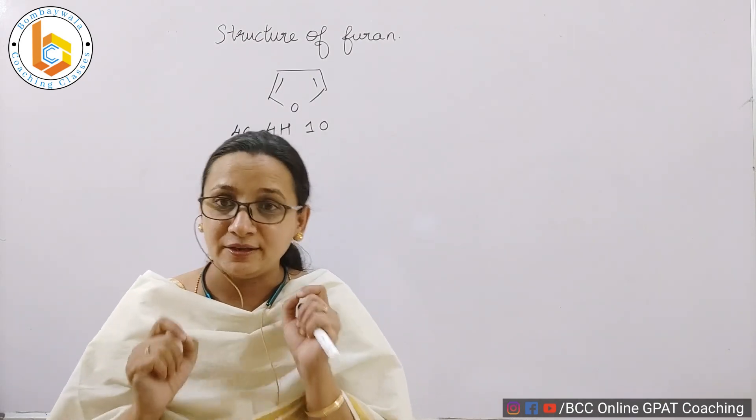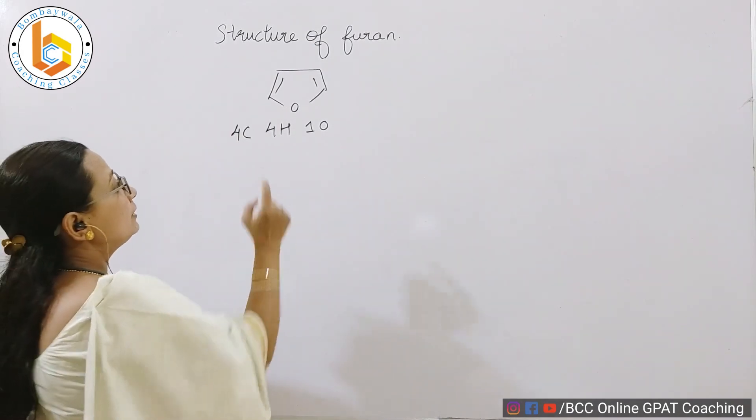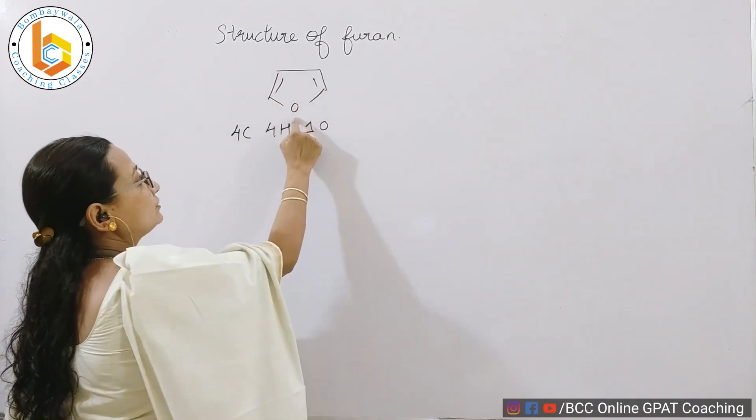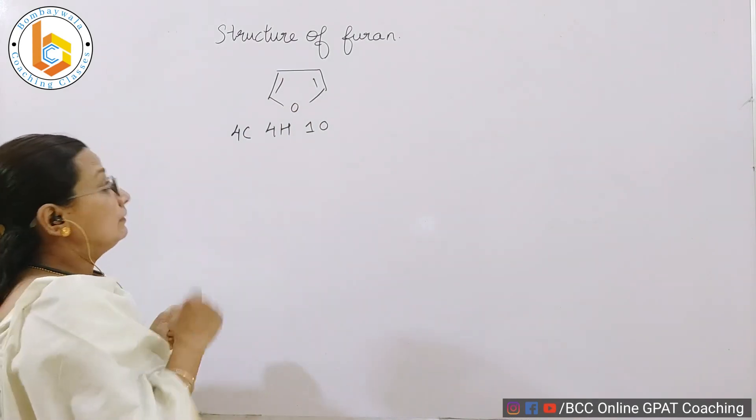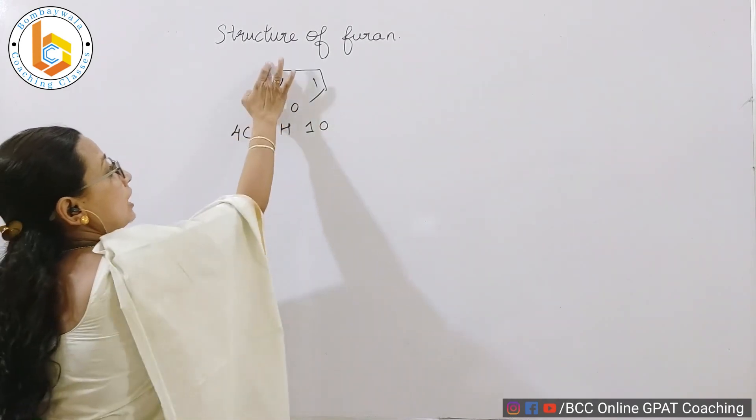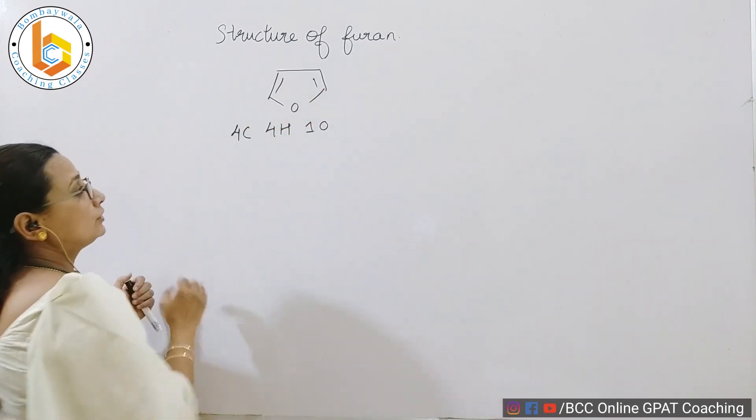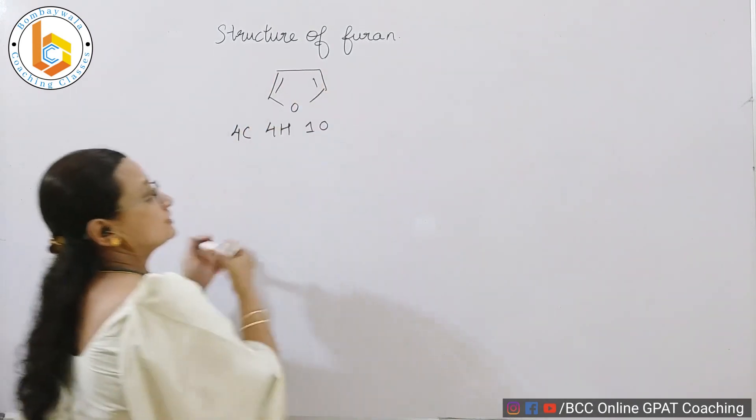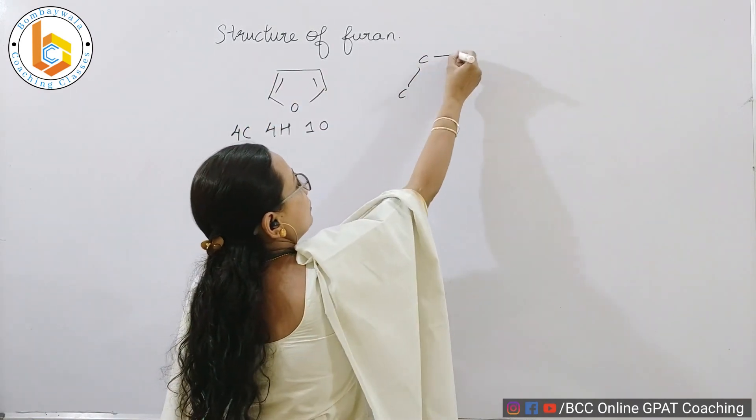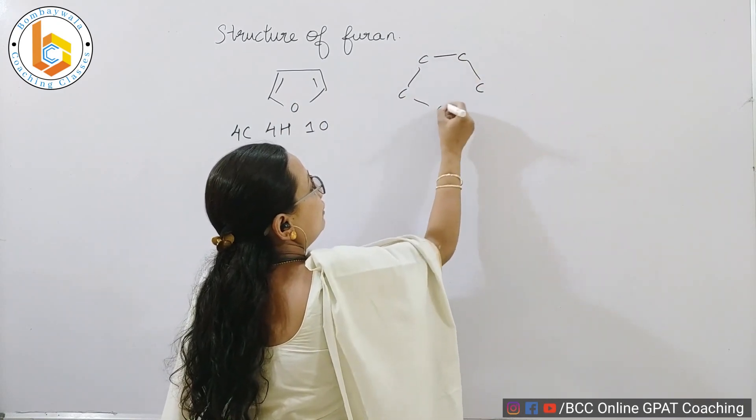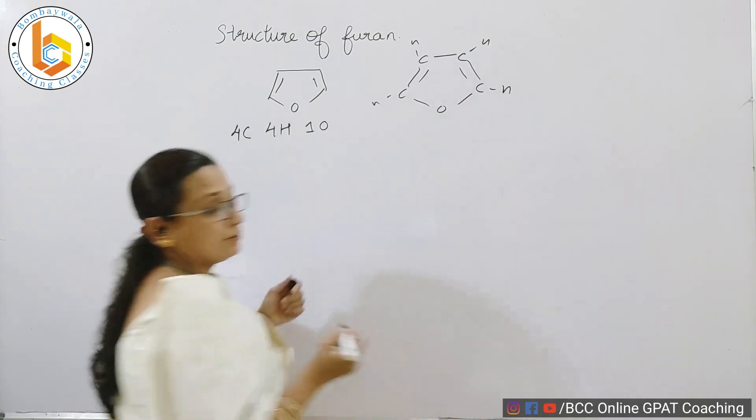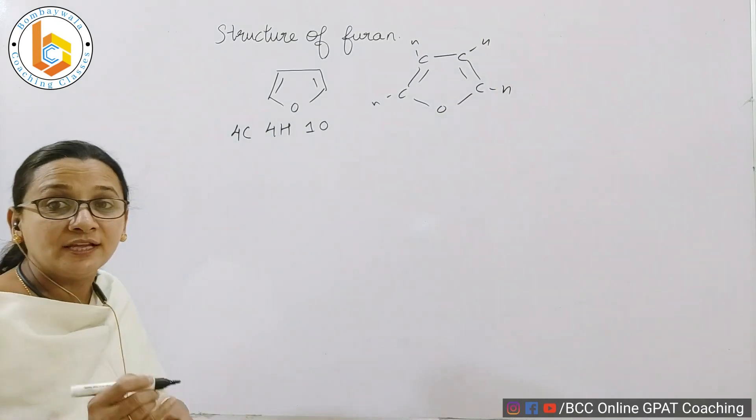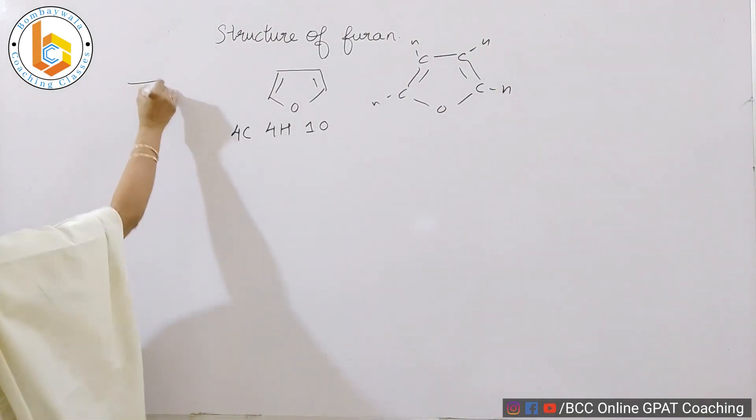The structure of pyrrolein is a five-membered ring containing one oxygen and aromaticity. It contains four carbons, one oxygen, and four hydrogens. I can write the structure like this so you can visualize it clearly: four carbons, four hydrogens, and one oxygen, whereas pyrrole contains four carbons, one nitrogen, and five hydrogens.